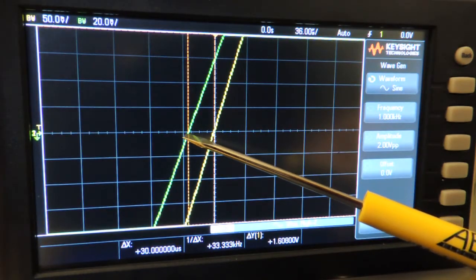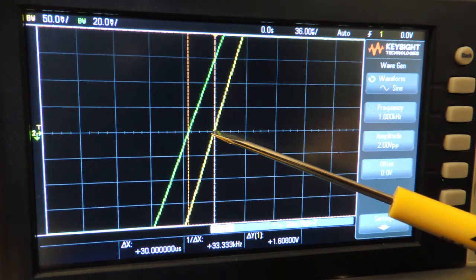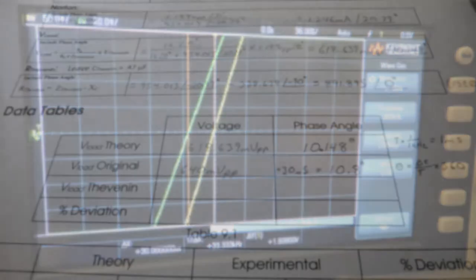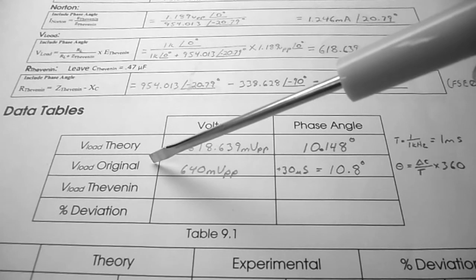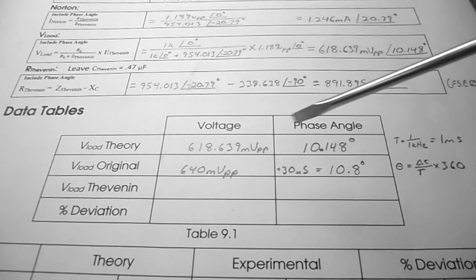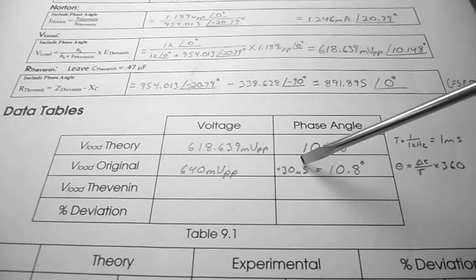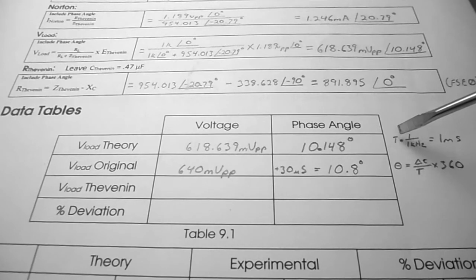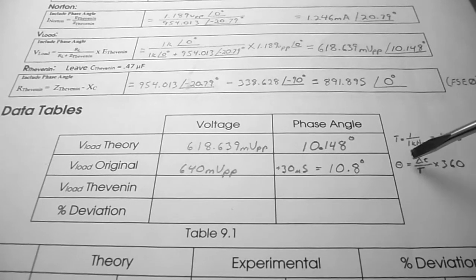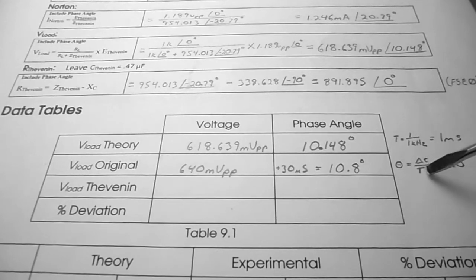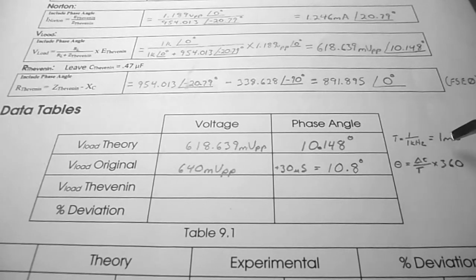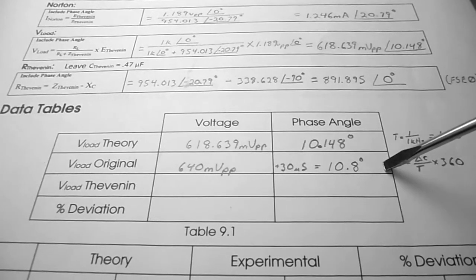Channel 2 is leading the input voltage on channel 1. Recording in table 9.1 for V-load original: voltage = 640 mV peak-to-peak, delta T = +30 microseconds leading. The period = 1/1kHz = 1 ms. Phase angle = (30 µs / 1 ms) × 360 = 10.8 degrees.